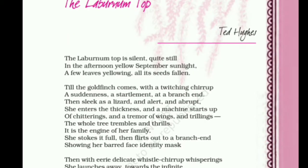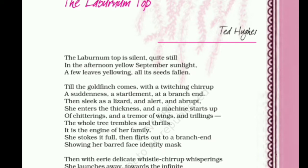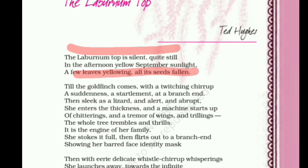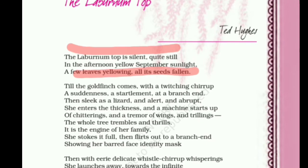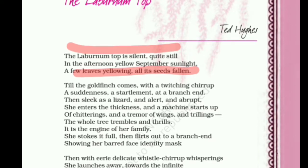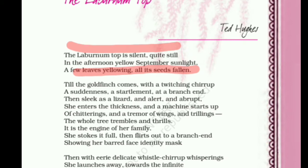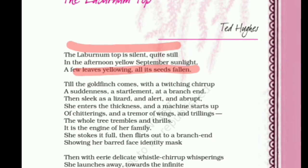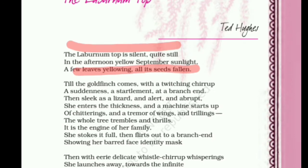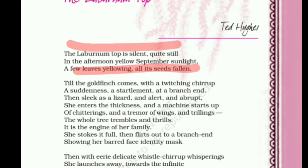The Laburnum Top is silent, quite still in the afternoon yellow September sunlight. A few leaves yellowing, all its seeds fallen. Laburnum is basically a kind of shrub, a plant, and it is described as quite still in the afternoon. The word yellow is used — September sunlight is yellowish in colour. The seeds have fallen down; the season is autumn, the month is September, and the leaves have turned yellow. Yellow is basically a representation of hardships in life.